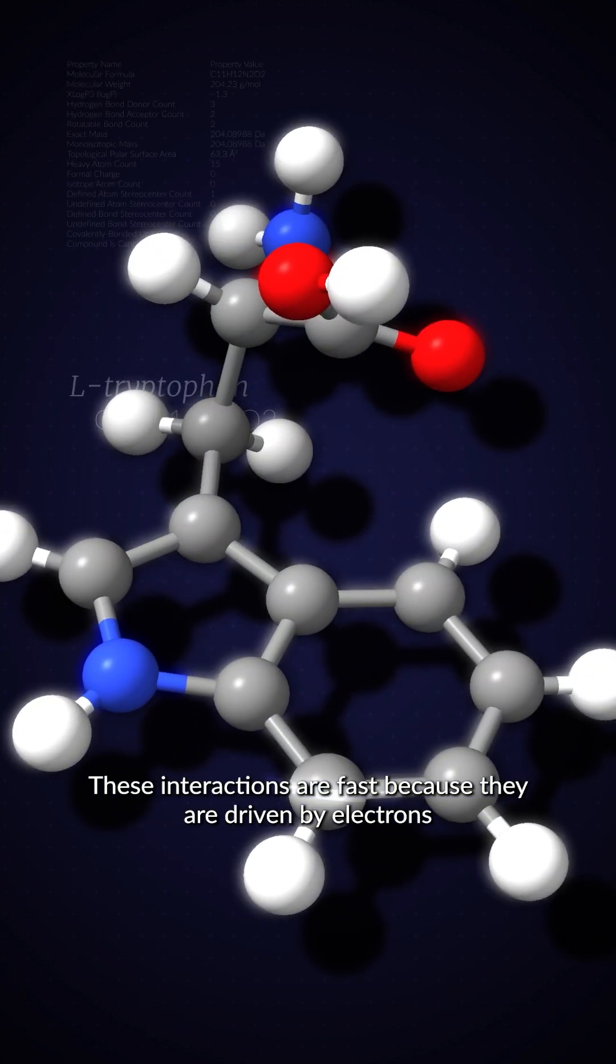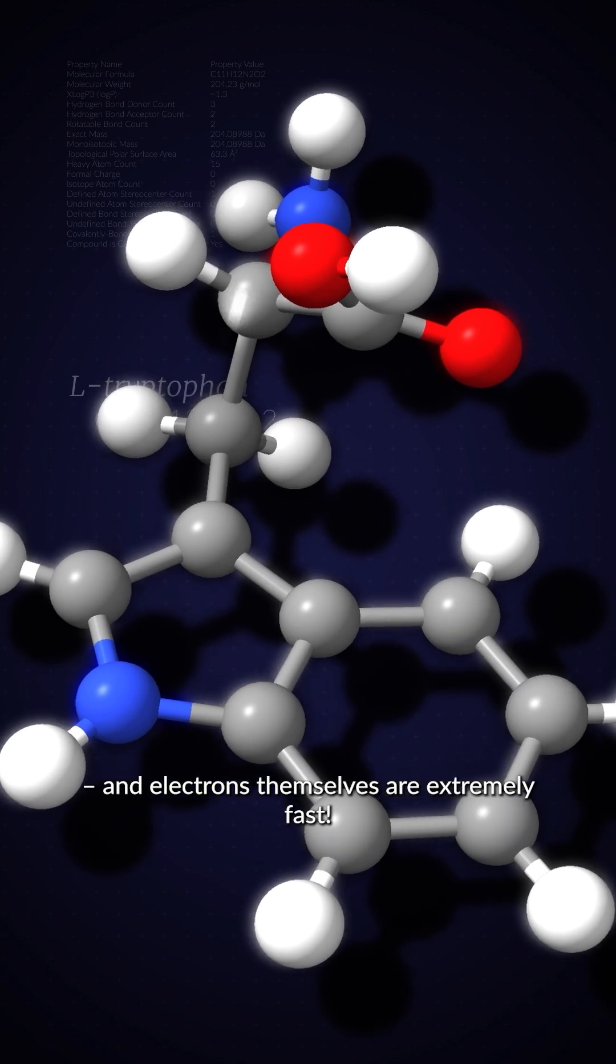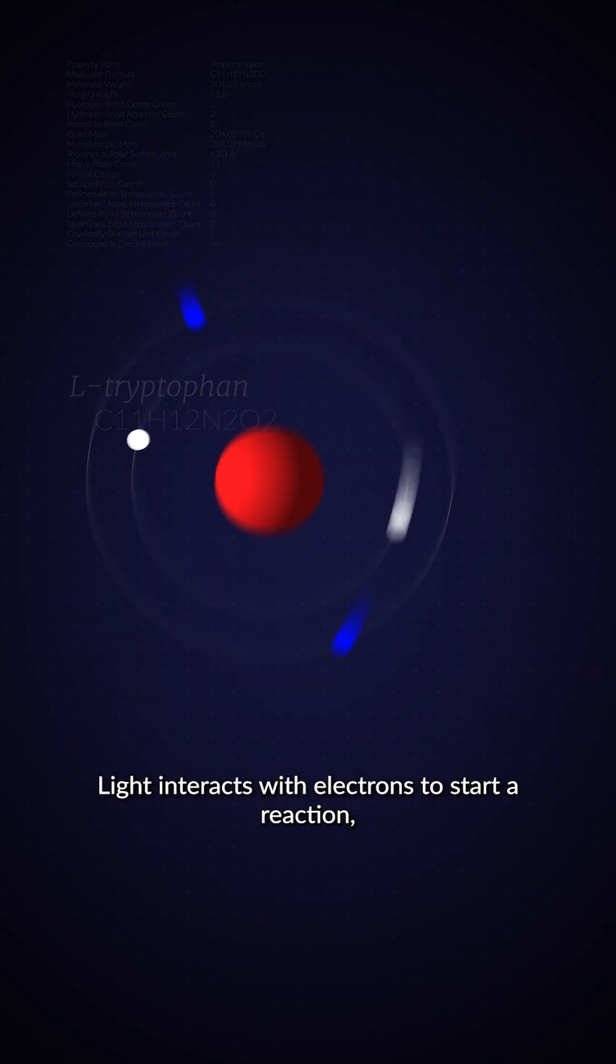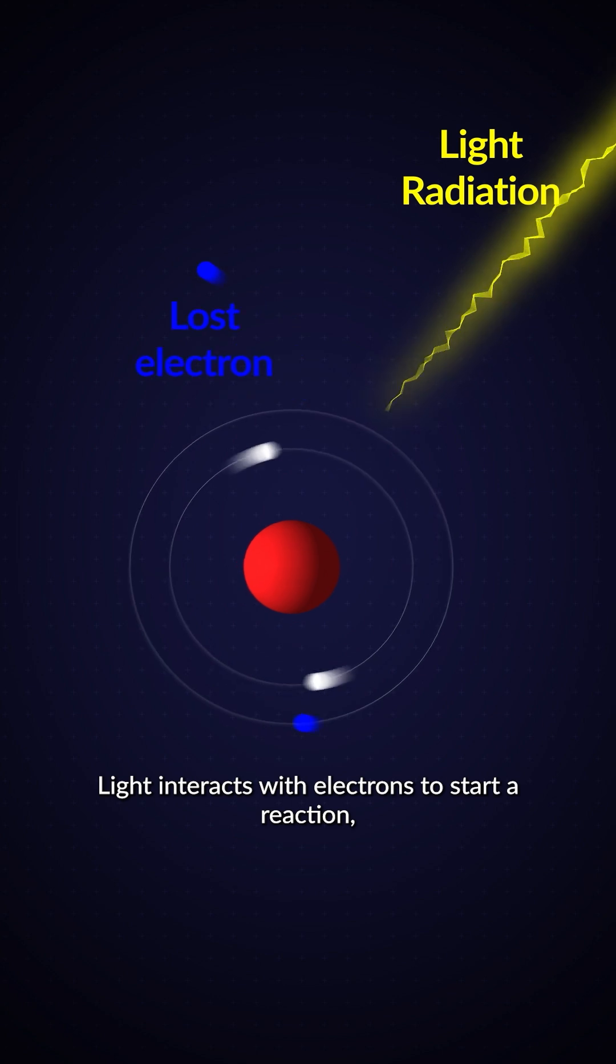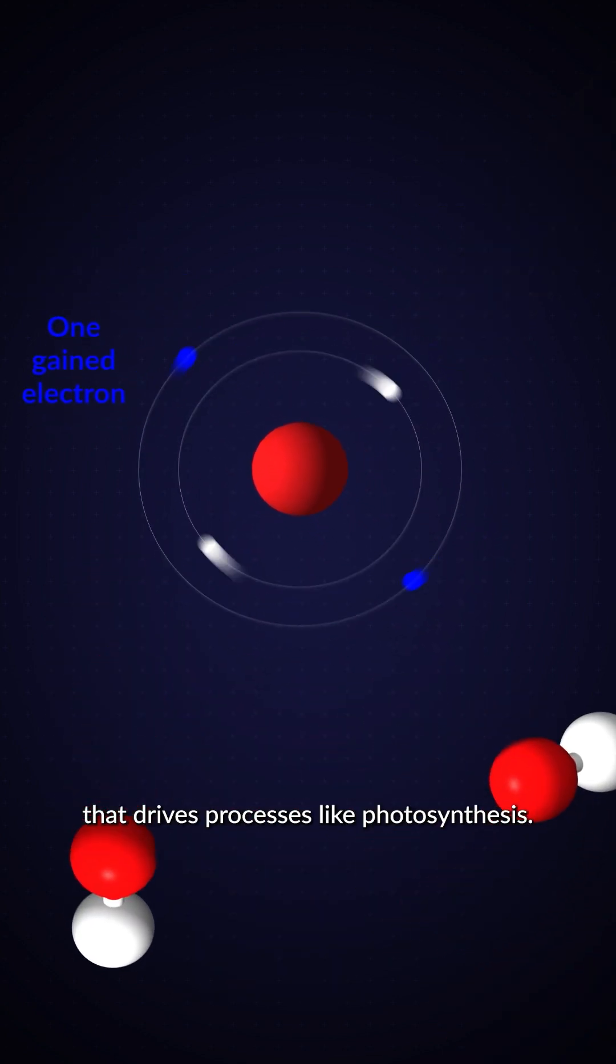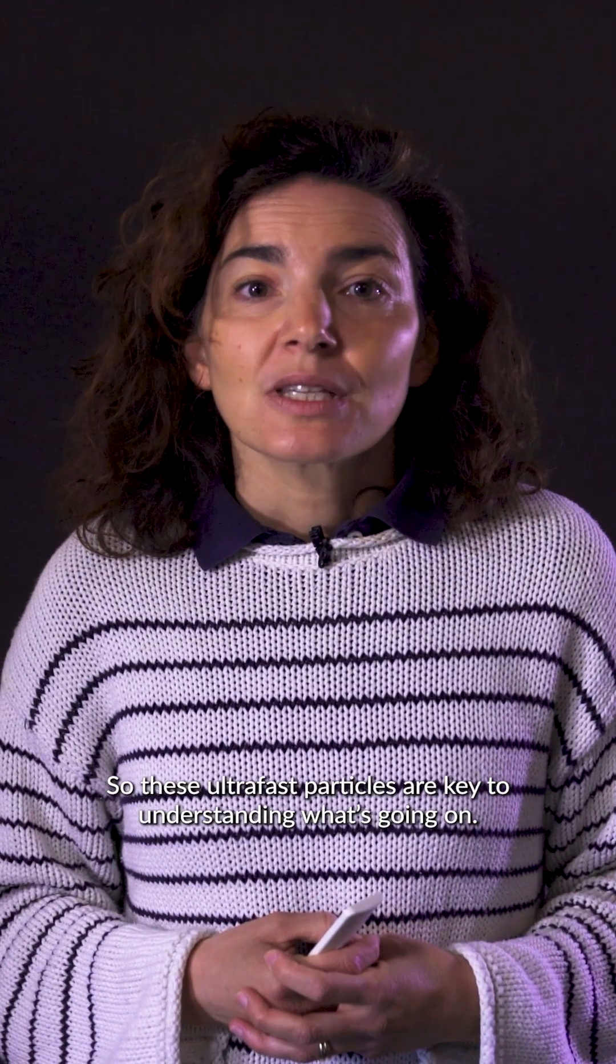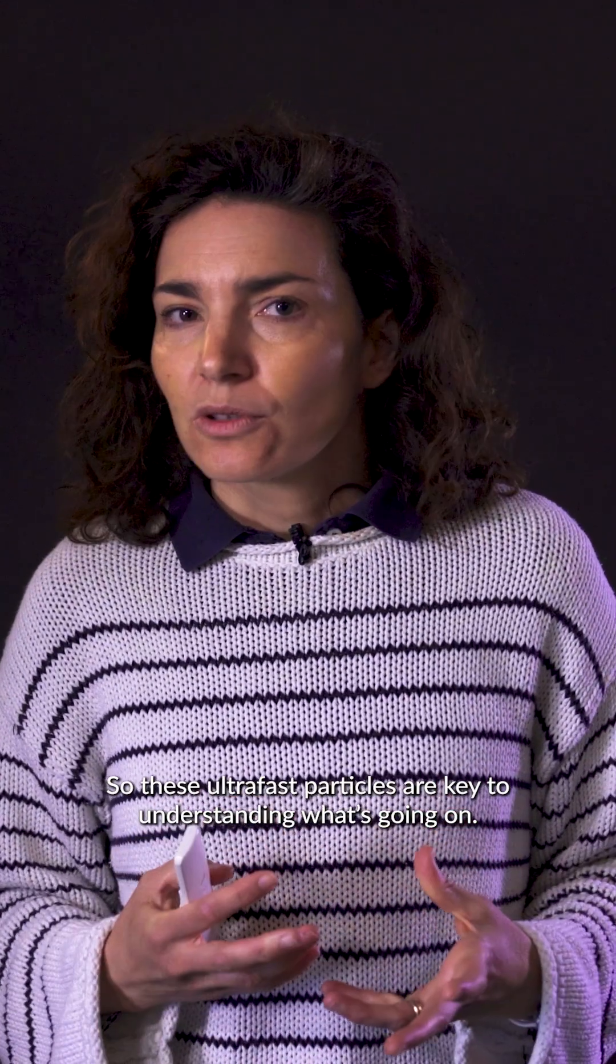These interactions are fast because they are driven by electrons, and electrons themselves are extremely fast. Light interacts with electrons to start a reaction, and then it's the exchange of electrons between molecules that drives processes like photosynthesis. So these ultra-fast particles are key to understanding what's going on.